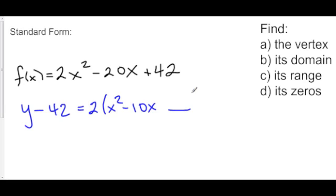Here we have 2 times x squared minus 10x. And I'm going to leave a blank here for my completing of the square. Now, the way that we complete the square is by dividing our b by 2. And that gives us the actual squared term. So we have y minus 42 is equal to 2 times x minus 5 quantity squared.